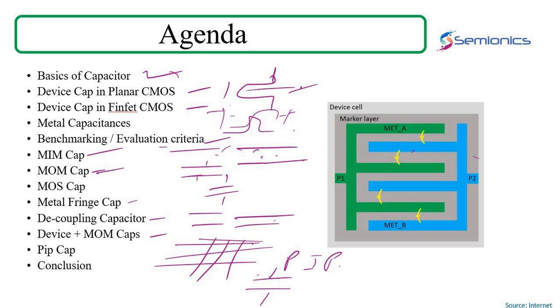Generally, whenever we have to do a fill, or whenever you have to add a cap in the vacant areas of analog design, we just add decap cells. But along with that, to get a high cap, we also use a combination of metal cap and a device cap together. That comes as a P cell, or you can create your own P cell out of it. There are different variants of doing it, so we'll look into that as well. These are all the aspects we will be studying in this session.